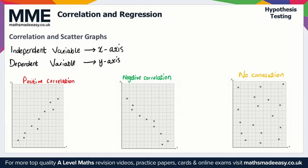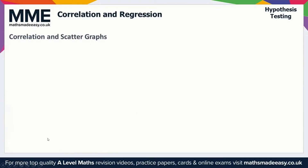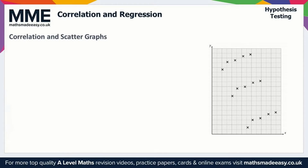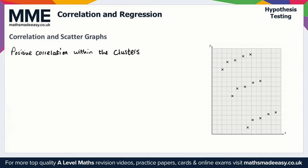We also have to be careful because correlation can appear in the form of clusters. What we can see is these clusters within the data. The general trend is negative correlation, but within the clusters there is positive correlation. So we have positive correlation within each cluster, but the overall general trend is negative correlation.